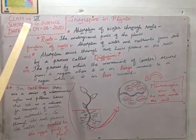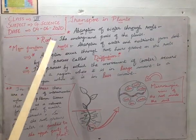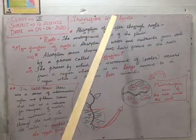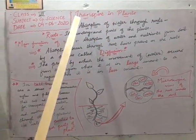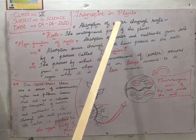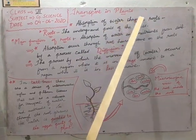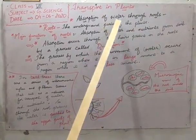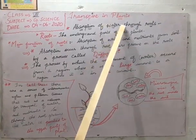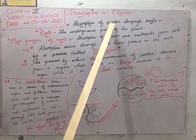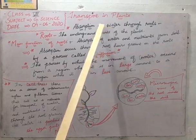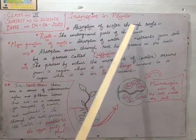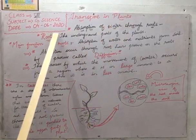Hello everyone, today we are going to discuss more about transport in plants — specifically the absorption of water through roots. Yesterday we discussed about the xylem vessel, which carries water from roots to other parts of the plant body. Today we'll discuss the mechanism.